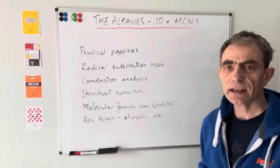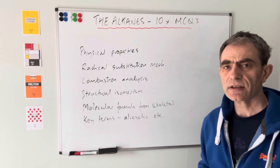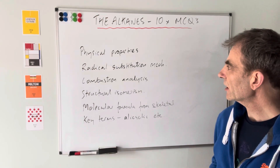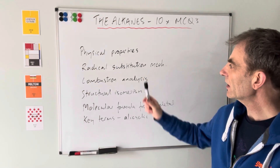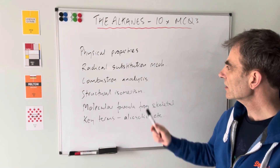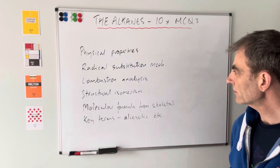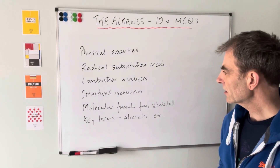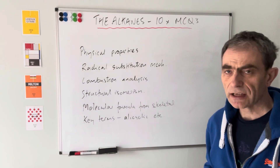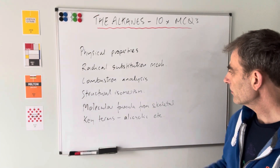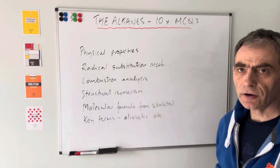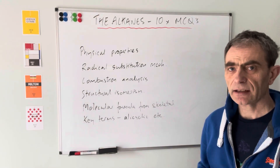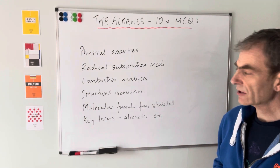Just click on the link and you can get the questions that way. The kinds of things it's looking at are: physical properties of alkanes, the radical substitution mechanism, a question on combustion analysis, a few questions on structural isomerism, molecular formula from a skeletal formula, and key terms - things like alicyclic, that sort of thing.